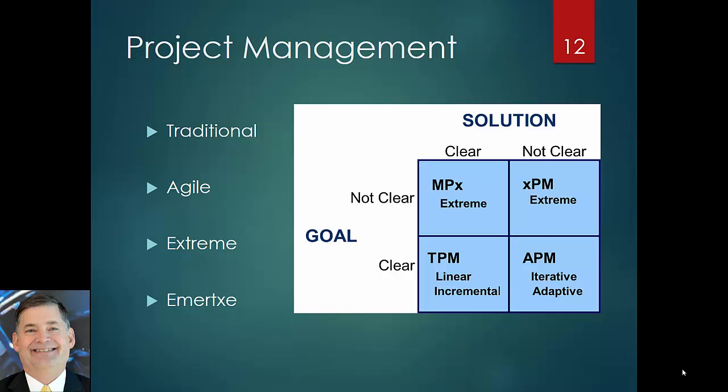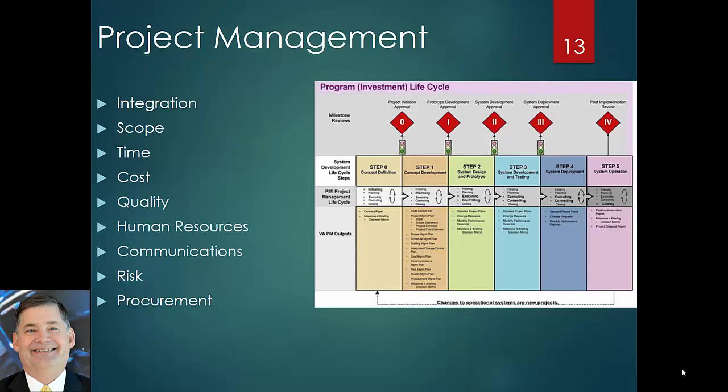Now that you've got this overview of project management, let's superficially look at some components associated with a traditional project management approach — specifically a program or project life cycle. You go through different stages: requirements, concept development, system design, development and testing, deployment, and then operations. As you're doing that, you have to integrate with existing systems, look at what's in scope and out of scope, how much time and what resources you have, how much money, and at what quality level you want to deploy a particular system.